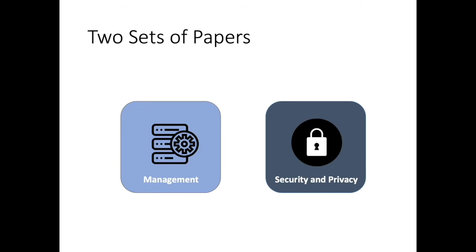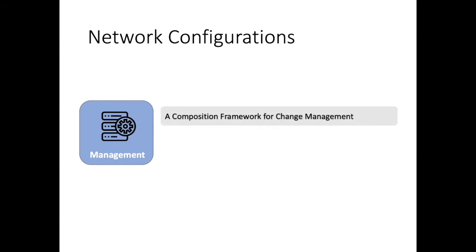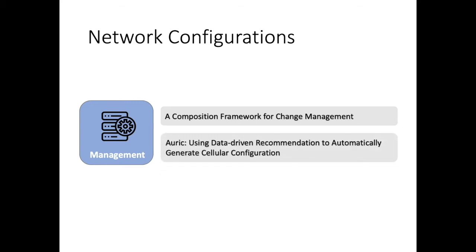There are two sets of papers in this section: management and security. From the network management perspective, our first paper is a composition framework for change management, coming from AT&T. The second paper is AURIC, using data-driven recommendation to automatically generate cellular configuration.